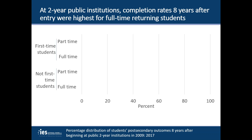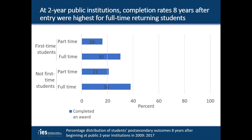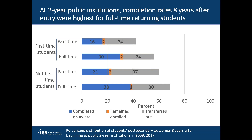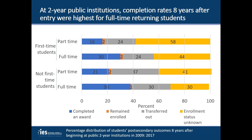The data from this new survey component show, for example, that completion rates eight years after entry were highest for full-time returning students. Small percentages of students were still enrolled after eight years, and transfer rates were higher than completion rates for part-time students. In addition, the survey shows the percentage of students whose enrollment status eight years after entry was unknown, meaning that they either dropped out of school or transferred to another institution without notifying the institution in which they first enrolled.